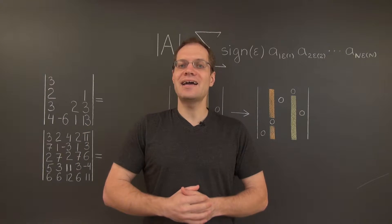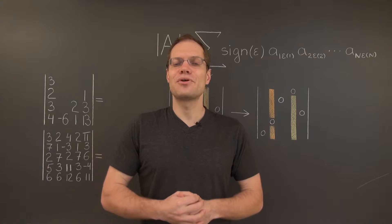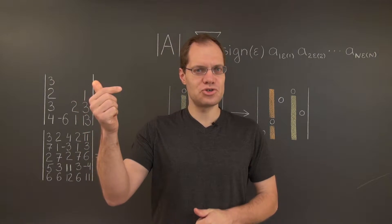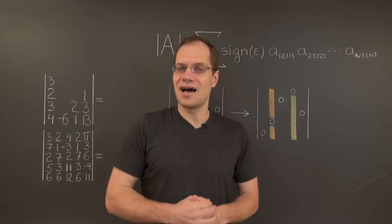I will now prove the anti-symmetric, also known as alternating, property of the determinant, which states that when you switch two columns or rows in a matrix, the determinant changes sign.